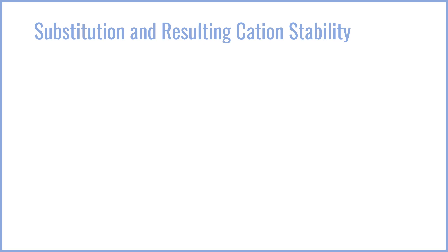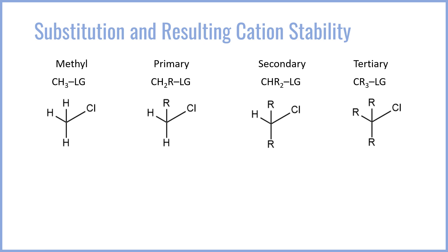So how do we determine which cations are more stable than others? The main thing to consider is the substitution of the cation — how many things other than hydrogen are bonded to the cationic carbon, or how many things are bonded to the carbon with the leaving group. A methyl cation will have nothing but hydrogen bonded to the carbon of the leaving group. On the opposite end of the spectrum is a tertiary carbon, which has three carbon-carbon bonds bonded to the carbon with the leaving group, so there are no C-H bonds on that resulting cation. Primary and secondary have one or two carbon-carbon bonds, respectively.